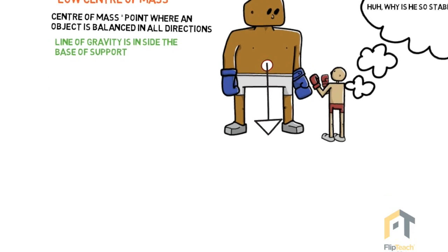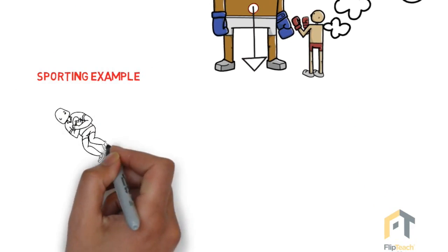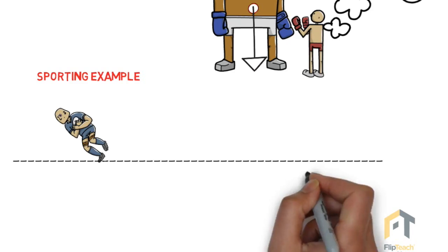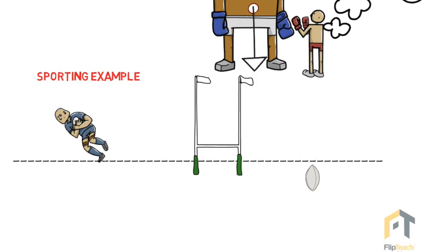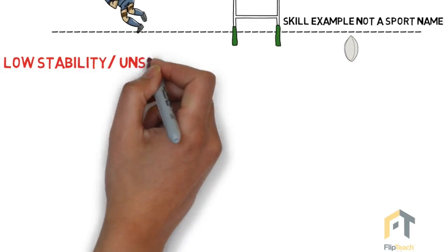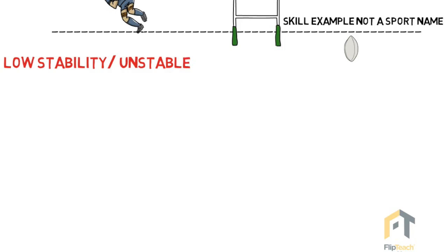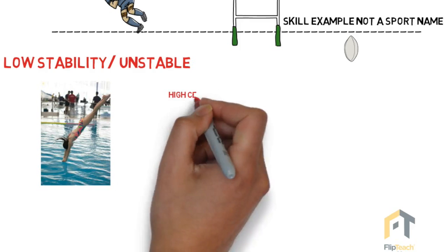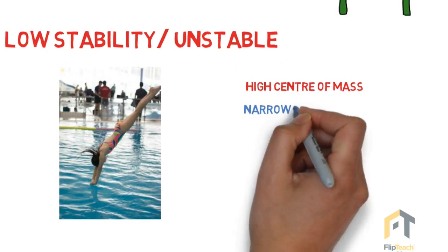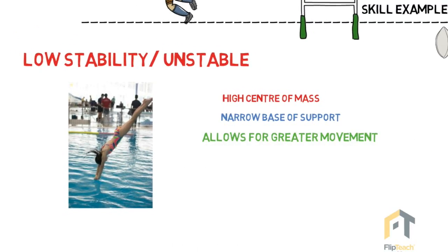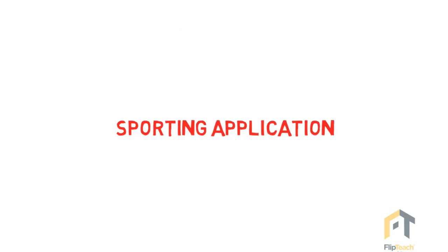There's also the line of gravity — if you have your center of mass and a line directly down falls within the base of support, that makes you more stable. Think of a rugby player: why do they crouch down when they run? Probably to be more stable. But don't just use rugby as an example — if somebody's doing a conversion kick they need to be unstable, so use a skill example rather than just a sport name. For instability in sport, diving is a really good example. We reverse the principles: instead of a low center of mass we have a high center of mass, a narrow base of support, and this instability allows greater movements like spins and rotations in gymnastics.